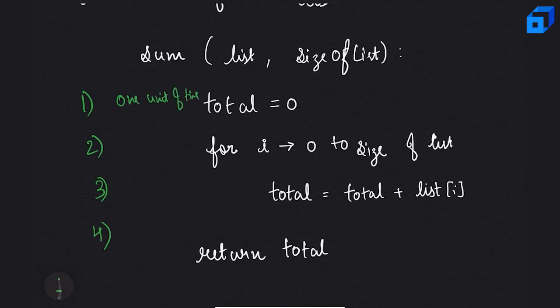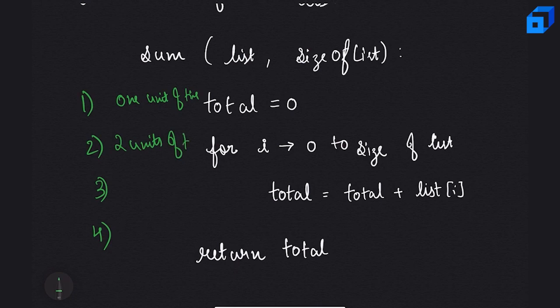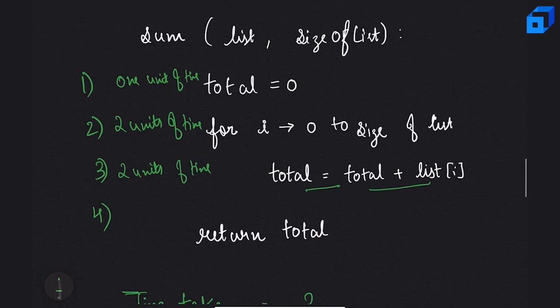For the second instruction, iterating over the list requires incrementing i and comparing i with the size of the list — one comparison and one increment — so it takes two units of time. The third instruction has one arithmetic statement and one assignment statement, also taking two units of time. The fourth instruction is just a return statement, taking one unit of time.